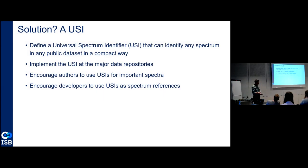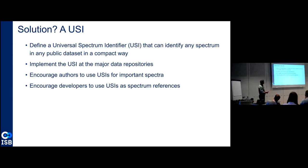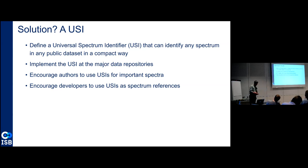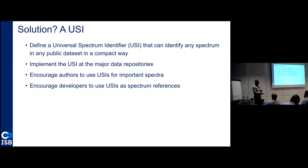So the solution that we came up with a couple of years ago and have been developing is this concept we call a universal spectrum identifier. The idea is that we can identify any spectrum in any public data set in a compact way — a way that we can communicate and say, I want to identify a particular spectrum, and then fetch it so that I can look at it closely. If we implement this at all of the major data repositories — Pride, Peptide Atlas, Massive, and others — it should be easy to pull out and view spectra with your own software.